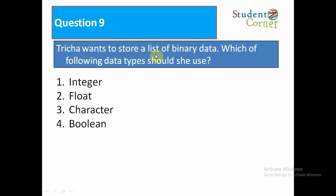Tricha wants to store a list of binary data. Which of the following data types should she use? Option 1: Integer. Option 2: Float. Option 3: Character. Option 4: Boolean. Obviously, the answer is Boolean. It takes true or false.